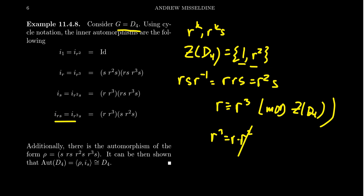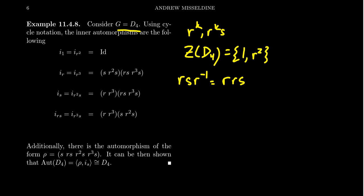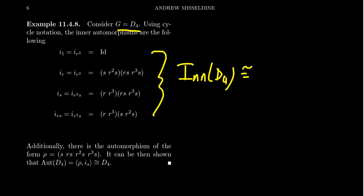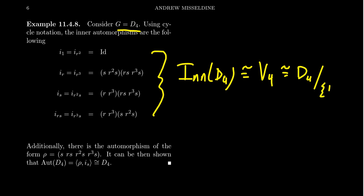Putting all of these inner automorphisms together, INN(D4) is actually isomorphic to the Klein four group — each inner automorphism is a 2-2 cycle, so squaring each gives the identity. This is consistent with our earlier observation that INN(G) ≅ G/Z(G): here D4 mod its center {1, R²} gives the Klein four group.